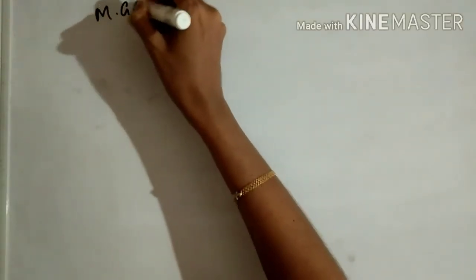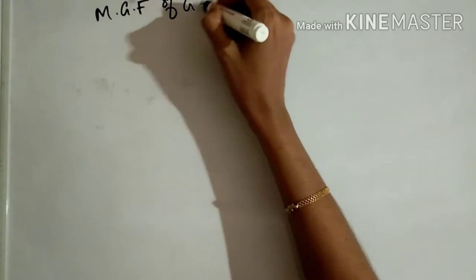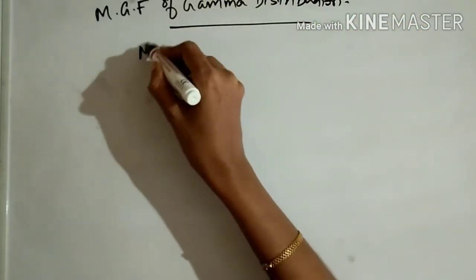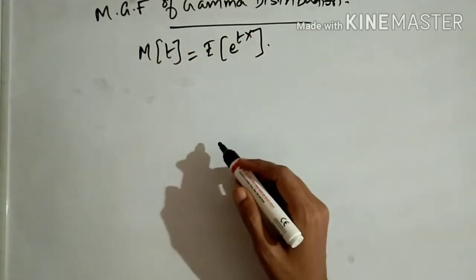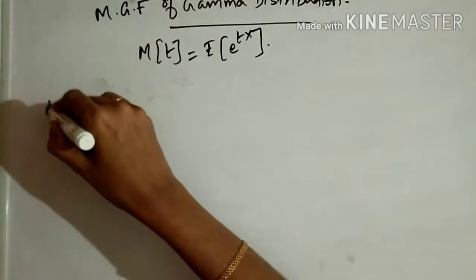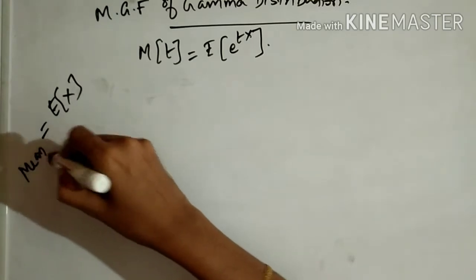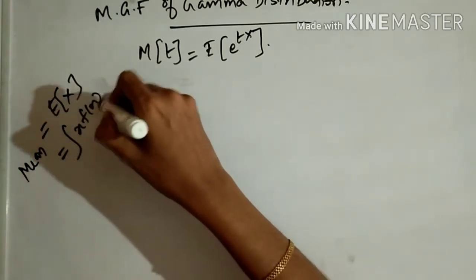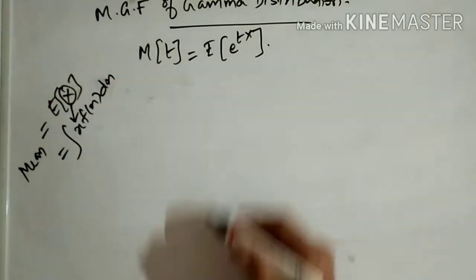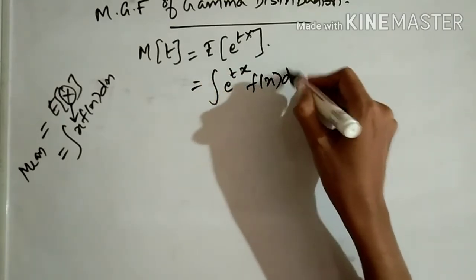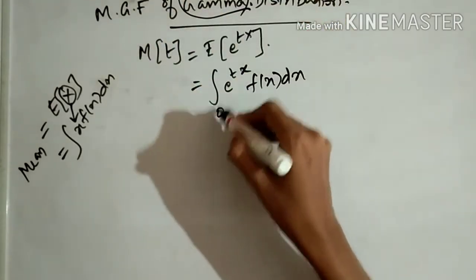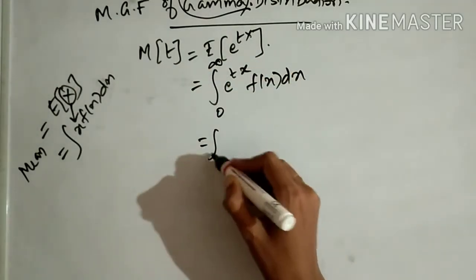Moment generating function of a gamma distribution. The formula is M(t) = E[e^(tx)]. We know that E[x] in continuous form is the integral of x times f(x) dx. In the same form, the MGF is the integral of e^(tx) times f(x) dx. For the gamma distribution, the limit is from 0 to infinity.